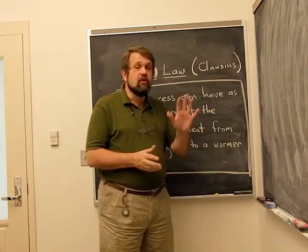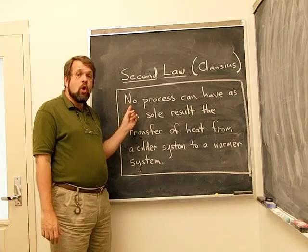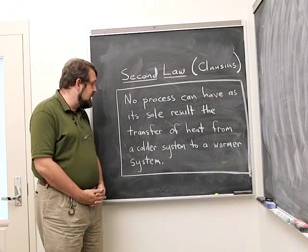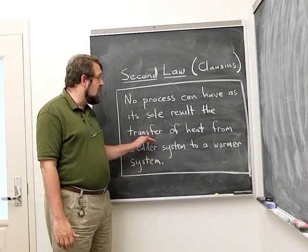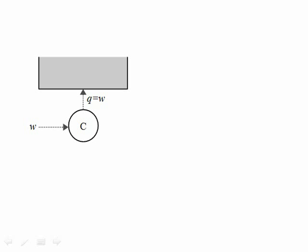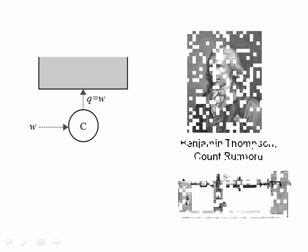Heat might go from a colder system to a warmer system, as in a refrigerator, but that's not its sole result. Another case is a disabled refrigerator — a machine C that takes work as input and expels that energy as heat into a thermal reservoir. This is nothing other than Rumford's cannon experiment: the cannon is the system C. Work was done on the cannon to drive the boring machine, and heat was expelled due to friction of the boring head on the interior of the cannon barrel. So this sort of machine is quite possible.